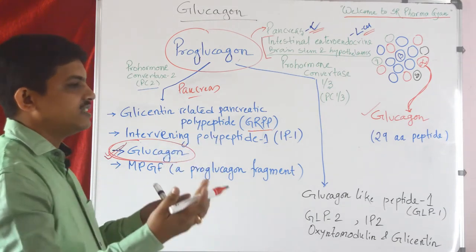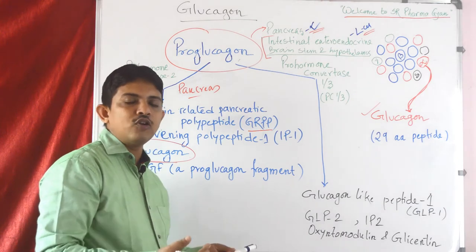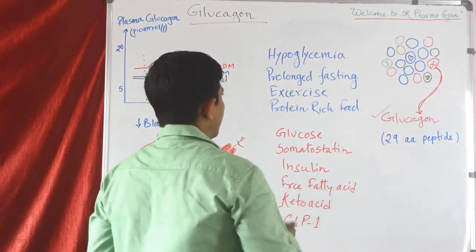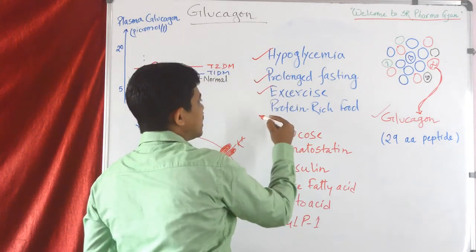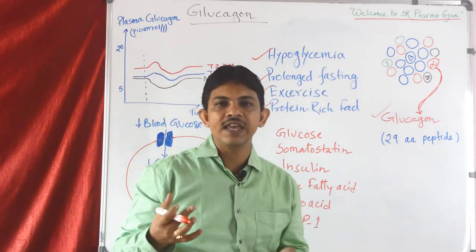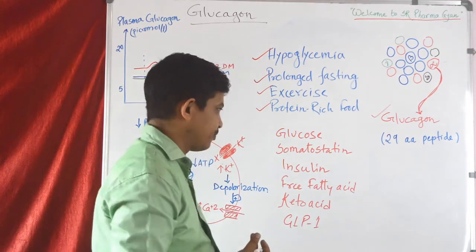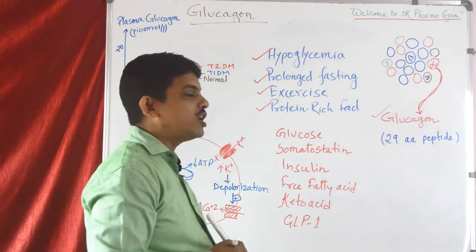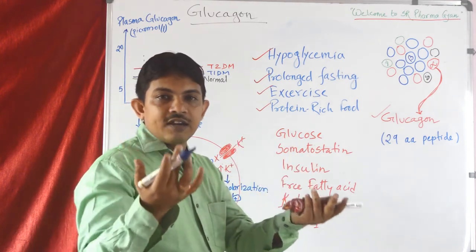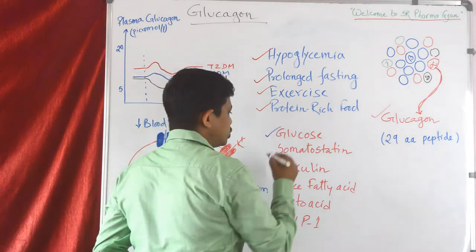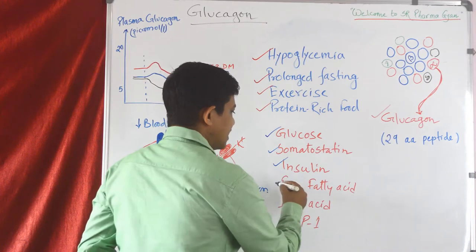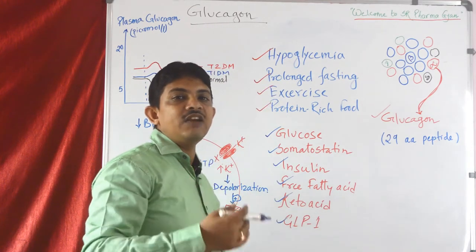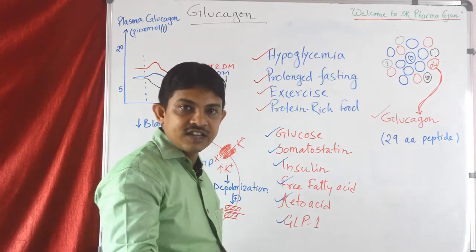Glucagon release is stimulated by a number of factors — hypoglycemia, prolonged fasting, exercise, and protein-rich food. These are key stimuli that enhance glucagon release from alpha cells. There are also inhibitory stimuli that reduce glucagon release: glucose, somatostatin, insulin (direct effect), free fatty acids, ketone acids, and GLP-1.